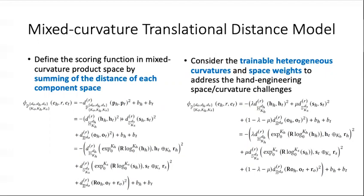However, the constructed mixed-curvature space typically requires manually defined fixed curvatures, which need domain knowledge and additional data analysis. Importantly, fixed curvature space also cannot capture the structure of KGs accurately. To address this problem, we set the mixed curvatures as trainable parameters to better capture the underlying structure of the KGs.